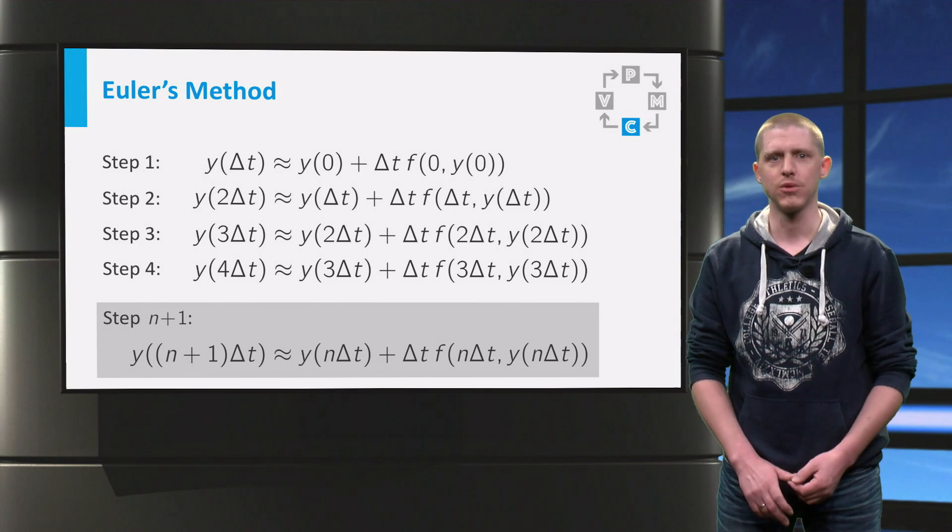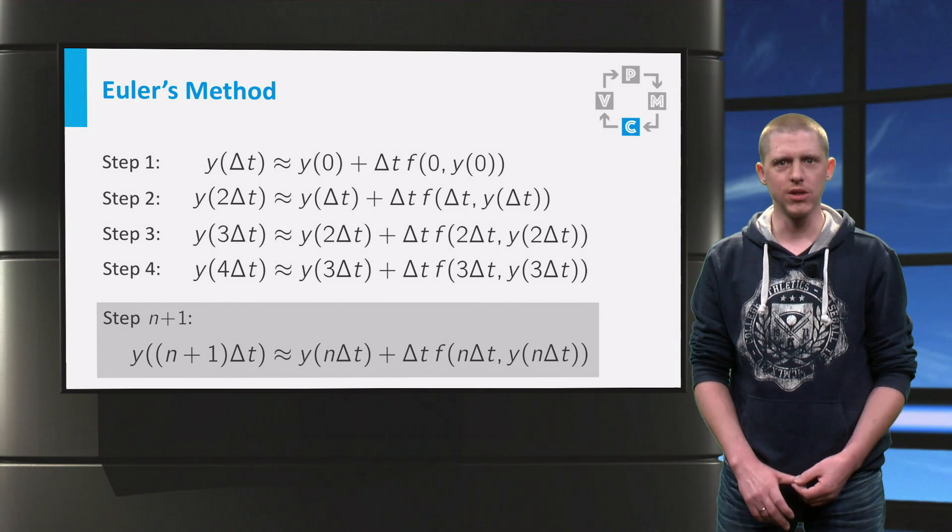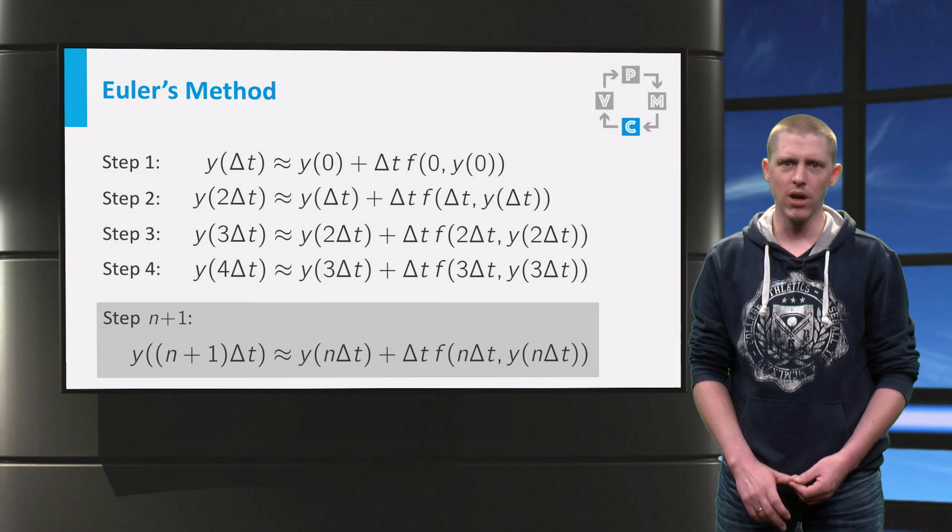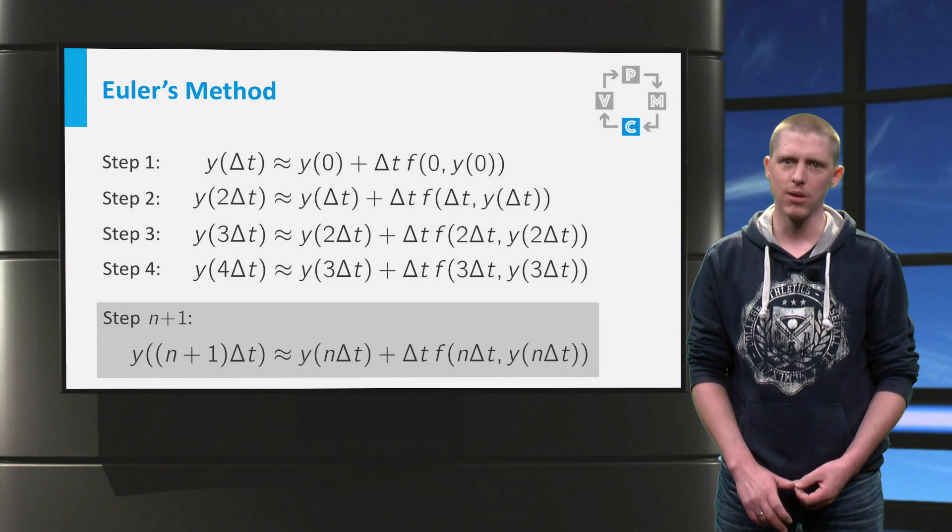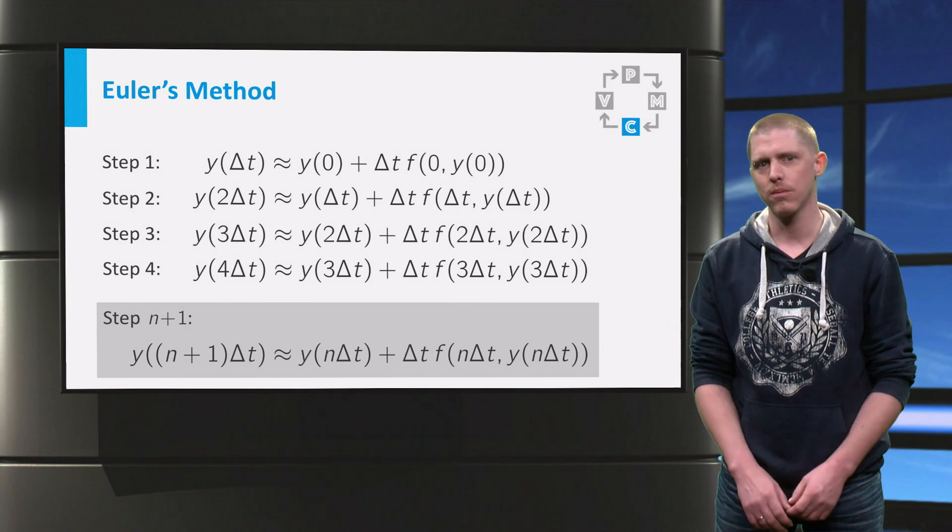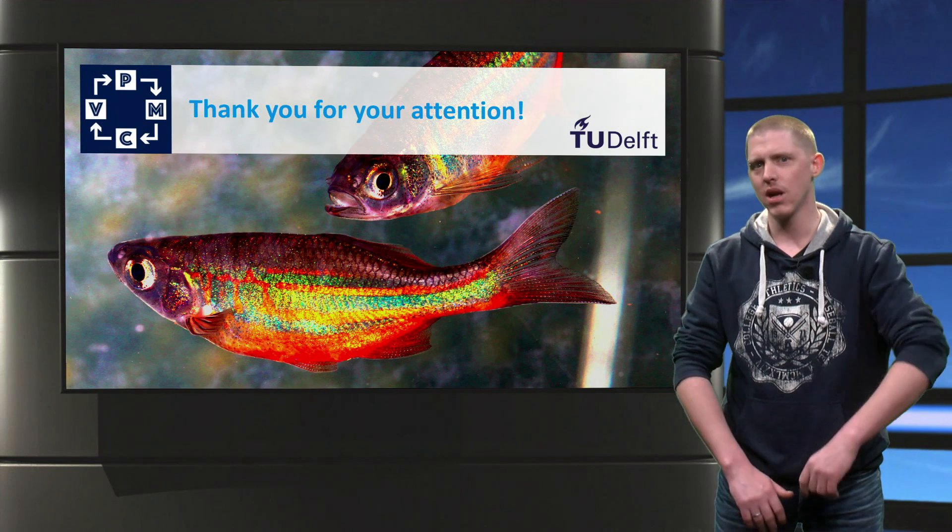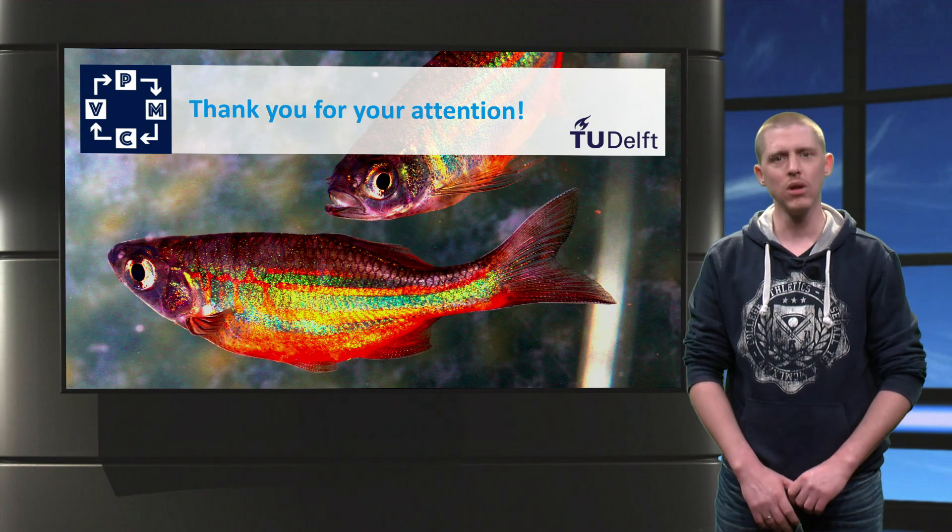If you perform a few steps yourself, you obtain a list of approximations of the function y at several consecutive times, all delta t apart. Now it's time for you to do a few steps yourself with Euler's method.